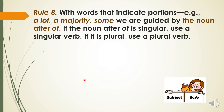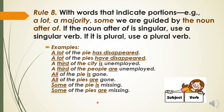We are guided by the noun after 'of'. If the noun after 'of' is singular, use a singular verb. If it is plural, use a plural verb. Let's compare: 'Some of the pie is missing' — the word 'pie' is singular, so we use a singular verb. 'Some of the pies are missing' — the word 'pies' is plural, so we use a plural verb.